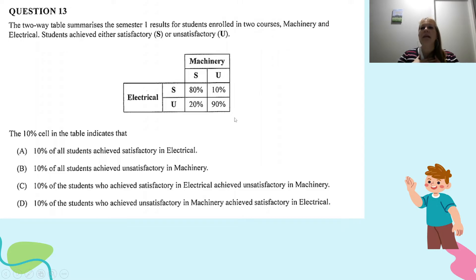So what we have here is I'm going to pretend that I am the Machinery teacher. My class is broken up into two groups. I've got a group of students who passed, they got satisfactory, and a group of students who failed my Machinery class, they got unsatisfactory. I don't know how many is in each group, I just know that they all study Machinery and they all study Electrical.